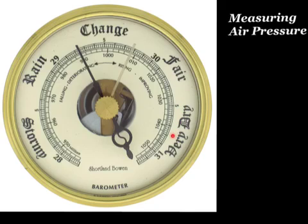As air becomes less dense when it warms, it leaves more room for water vapor. The warm air rises with the water vapor, which reaches the upper atmosphere where it cools and condenses, creating clouds. So as we have low pressure at the surface, we generally have cloudy skies and rain. If the pressure is high, the molecules in our atmosphere are closer together, there is less room for water vapor, and therefore we have fewer clouds and less chance of precipitation.